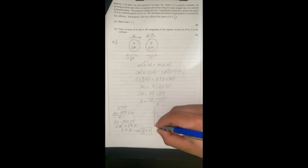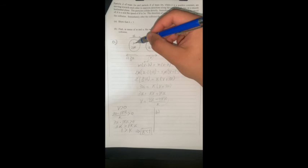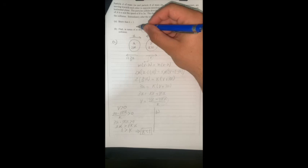Part B asks: find in terms of m and u the magnitude of the impulse exerted on B by A in the collision. The impulse is the same whether I calculate it on A or B, but I need to find the impulse on A because I have k as unknown and he wants it in terms of u and m only.